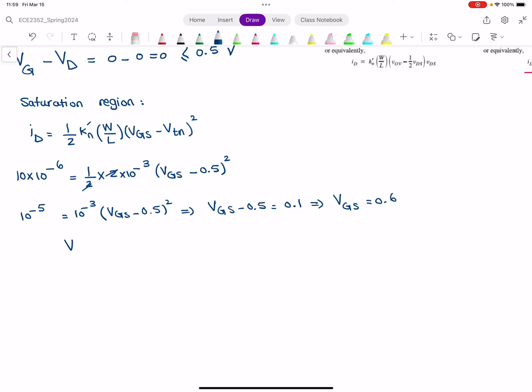VGS equals VG minus VS, and that should equal 0.6. VG equals 0, so from here, I can find VS as negative 0.6 volts. That's the source voltage we were looking for.